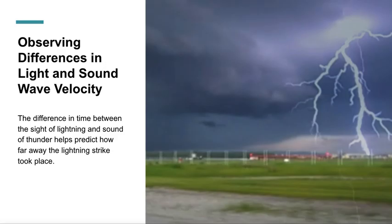Observing differences in light and sound wave velocity. You can observe the difference in speed of light and sound during a thunderstorm. Although lightning and thunder occur at the same time, thunder seems to come after lightning. This is because light travels faster than sound. Therefore you see lightning before you hear thunder.